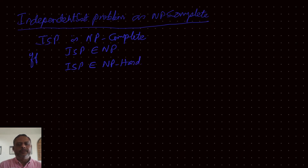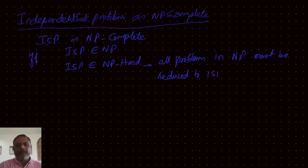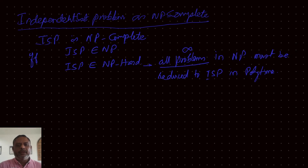NP-hard means all problems in NP must be reducible to our independent set problem in polynomial time. The problem is that 'all' means there are almost infinite possible problems. Even if we leave one out, it fails to prove NP-hardness, and then we fail to prove NP-completeness.